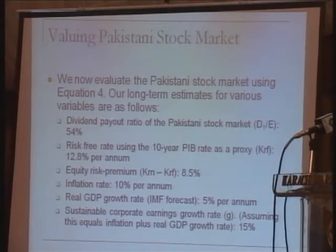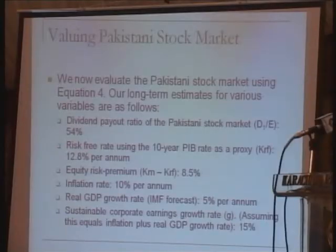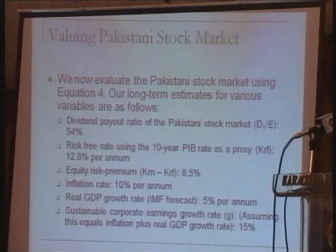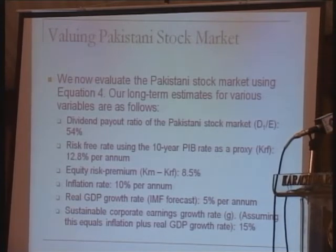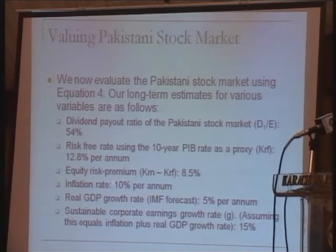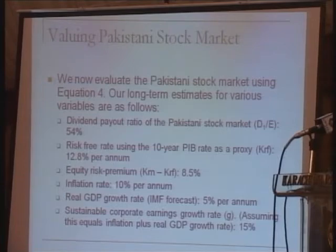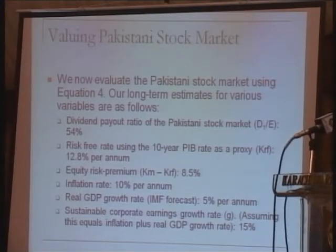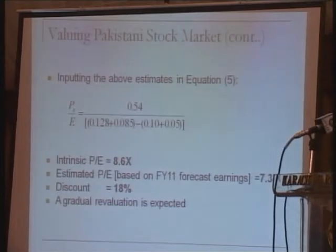Looking at some of the variables today: the dividend payout ratio is about 54% — so if a company earns 100, it pays out 54 rupees in dividend and keeps the rest for growth. The risk-free 10-year PIB rate is about 12.8%. The equity risk premium has historically been 8%; we are using 8.5% for now. Inflation is around 10% over the long term, and real GDP growth is forecast at 5% going forward. So the corporate earnings growth rate — the sum of inflation and real GDP growth — is expected to be 15% in Pakistan. Putting all these numbers into the equation, the intrinsic price-to-earnings ratio of the Pakistani stock market right now is about 8.6 times. This is where the market should be valued.